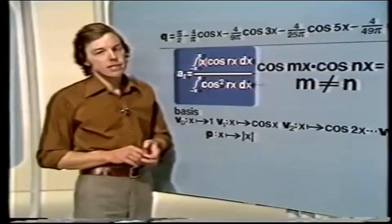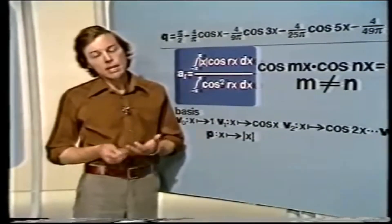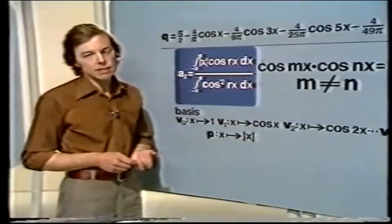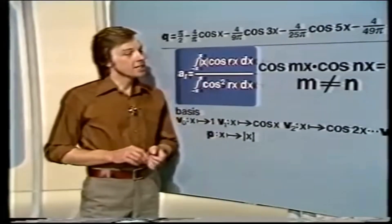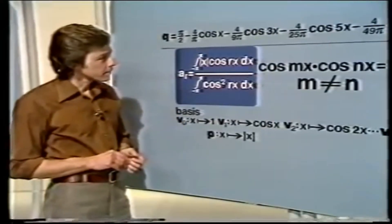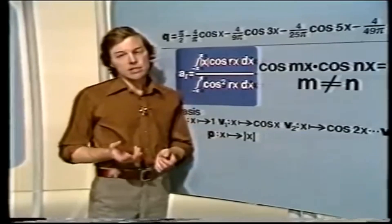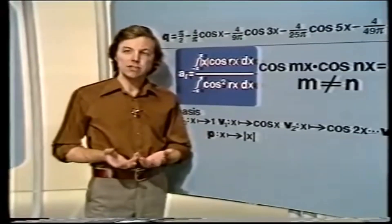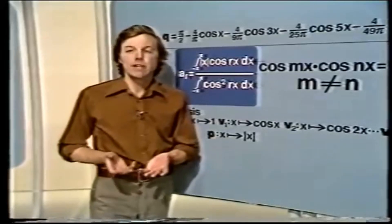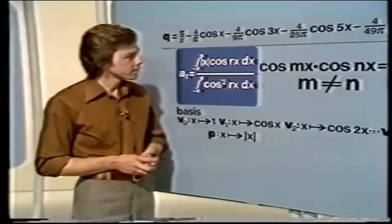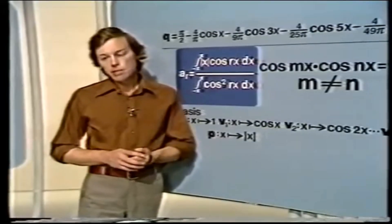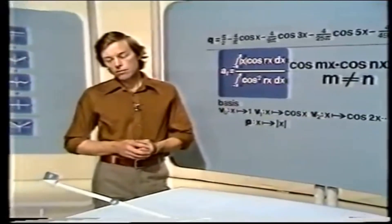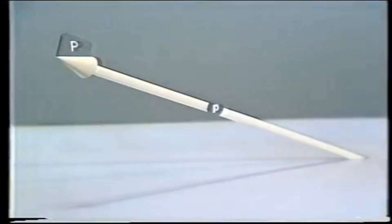This idea of approximating to a function by a set of orthogonal functions really is one of the big ideas in mathematics and one of the most powerful techniques in mathematical physics. It's interesting to notice that although it is so important, we've got to it by a fairly simple and straightforward extension of our ordinary linear algebra techniques — straightforward but perhaps with a liberal use of our imagination. What we've done is to start with this particular problem: we had a point P, a subspace, and the problem was how to find a point in that subspace which gives us the best approximation we can to the point P.